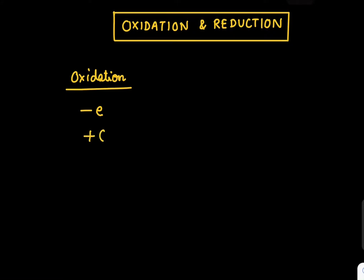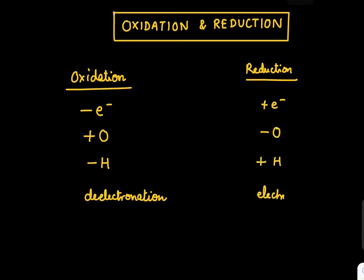Oxidation also means gaining oxygen and losing hydrogen. There's a name for it - it is called de-electronation, which means removal of electrons. Reduction is the opposite: gain of electrons, loss of oxygen, and gain of hydrogen. This is called the electronation process.